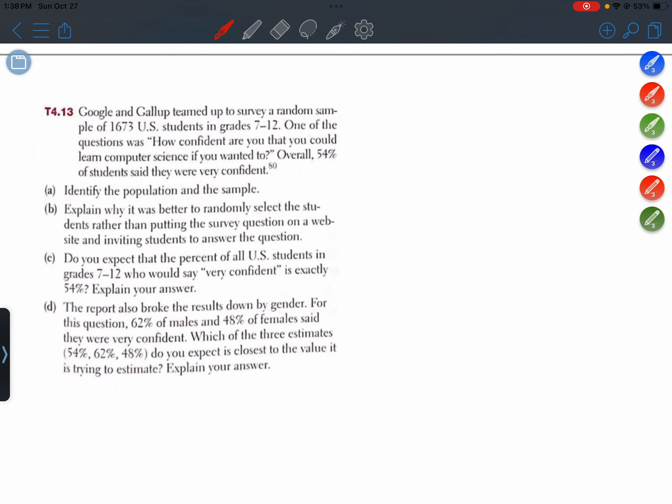4.13. Google and Gallup teamed up to survey a random sample of 1,673 U.S. students in grades 7 to 12. One of the questions was, how confident are you that you could learn computer science if you wanted to? Overall, 54% of students said they were very confident.